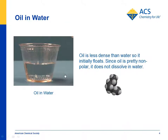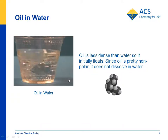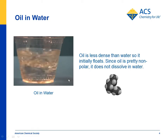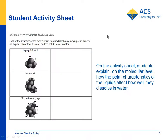Then students put some oil — in this case we use a little vegetable oil. Instead of sinking to the bottom the way the corn syrup did, it floats to the top because it's less dense. No matter how much you stir it, it won't mix in with the water — it doesn't dissolve. If you take a look at it, it's pretty non-polar; these carbon-hydrogen bonds are only very, very slightly polar, so this is basically considered a non-polar molecule. On the student activity sheet, students are given an opportunity to explain their observations in terms of polarity for each of the different molecules that was mixed in with the water.